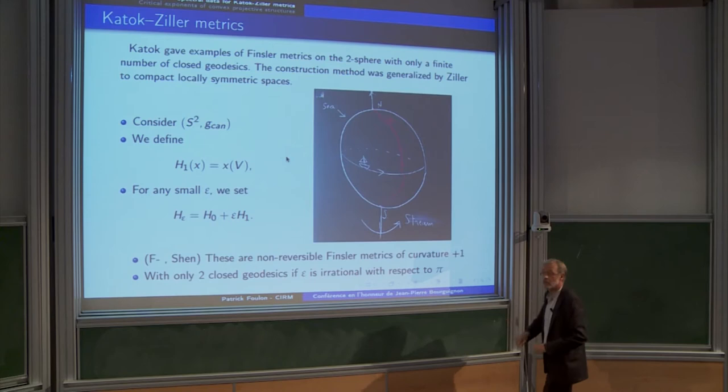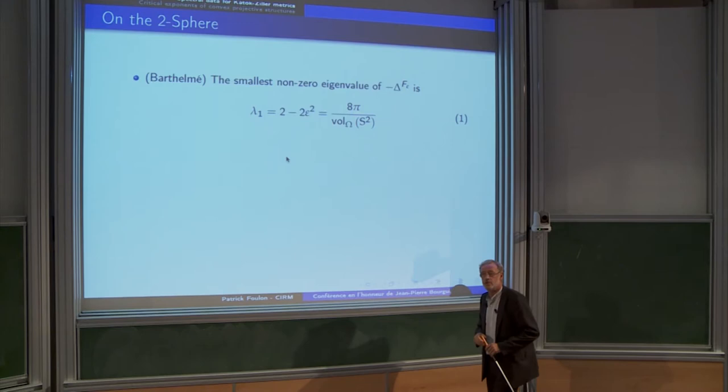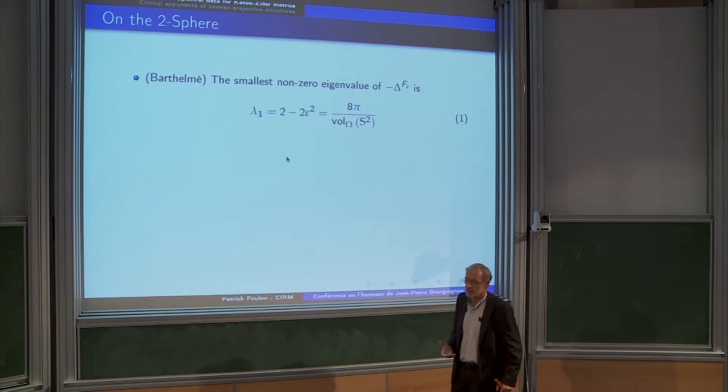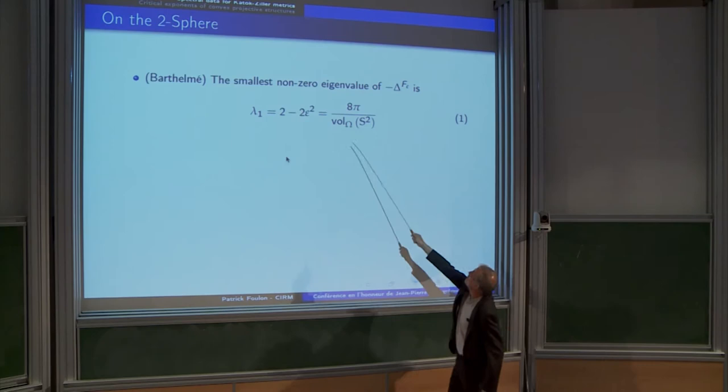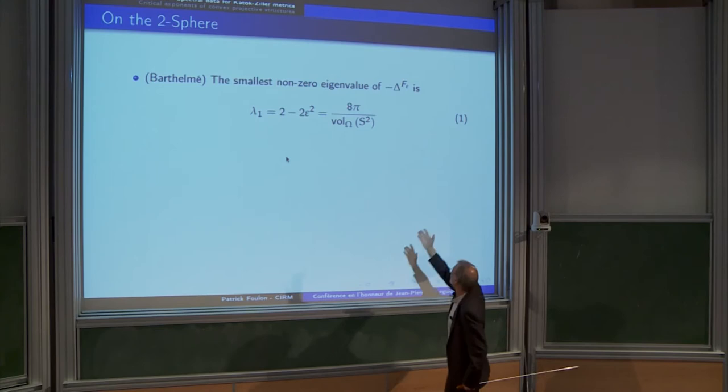In which case? When epsilon is irrational with respect to pi. So I asked my PhD student, can you compute the spectral data? And at least find the lowest eigenvalue. Indeed that. He got lambda one with an expression very easy. Eight of pi of a volume omega. What is volume omega? The volume with respect to the contact form. So he got that formula for this metric.